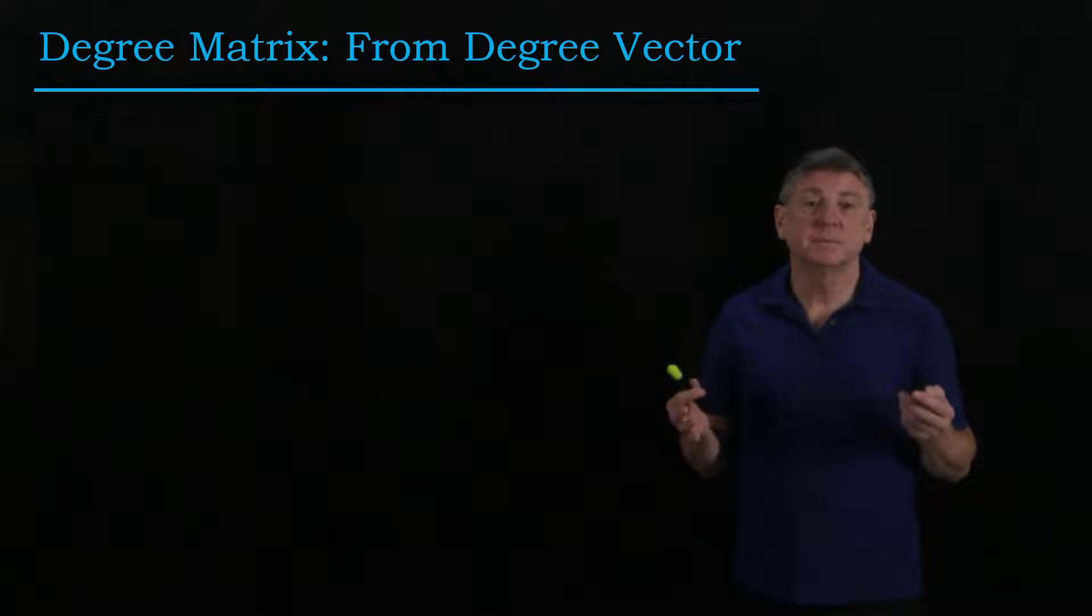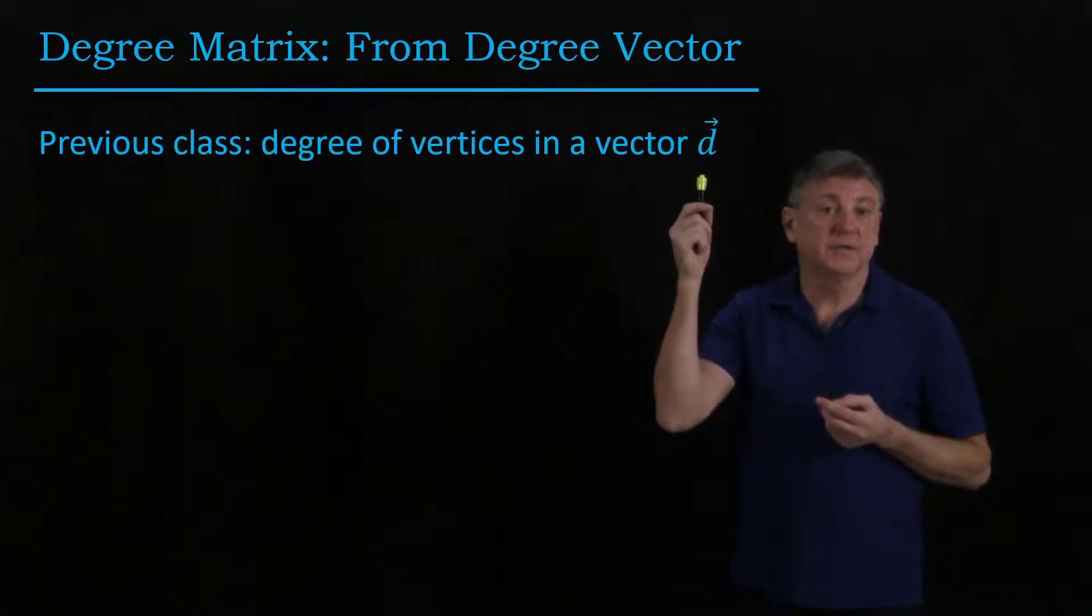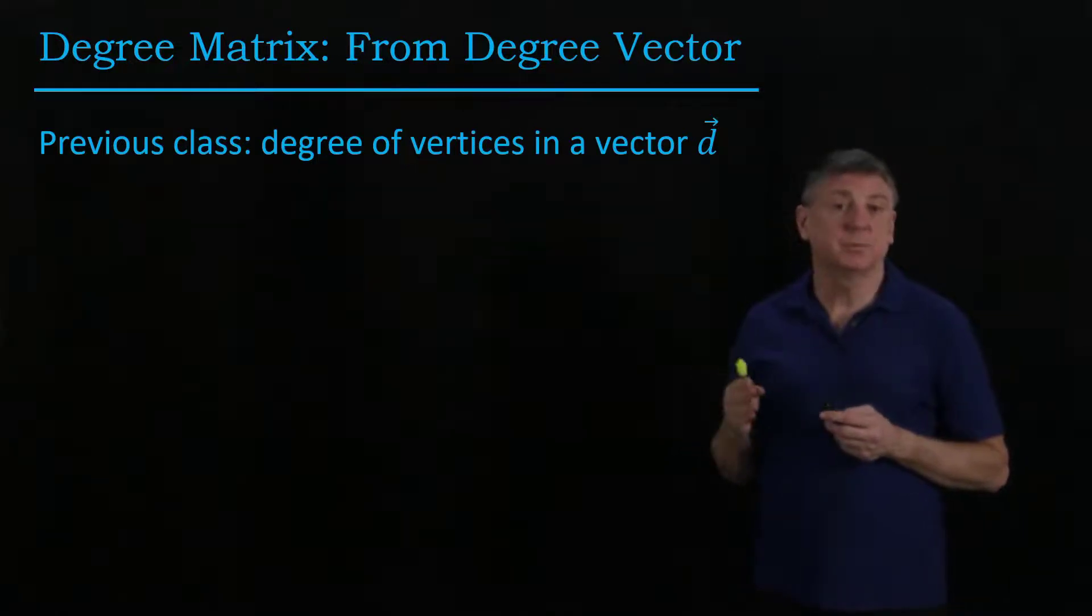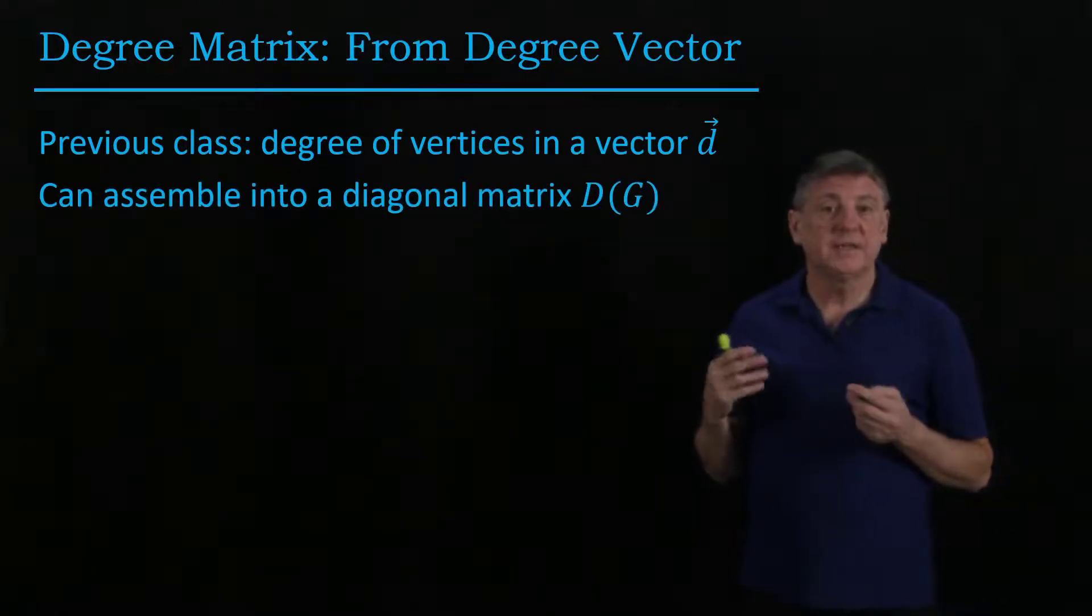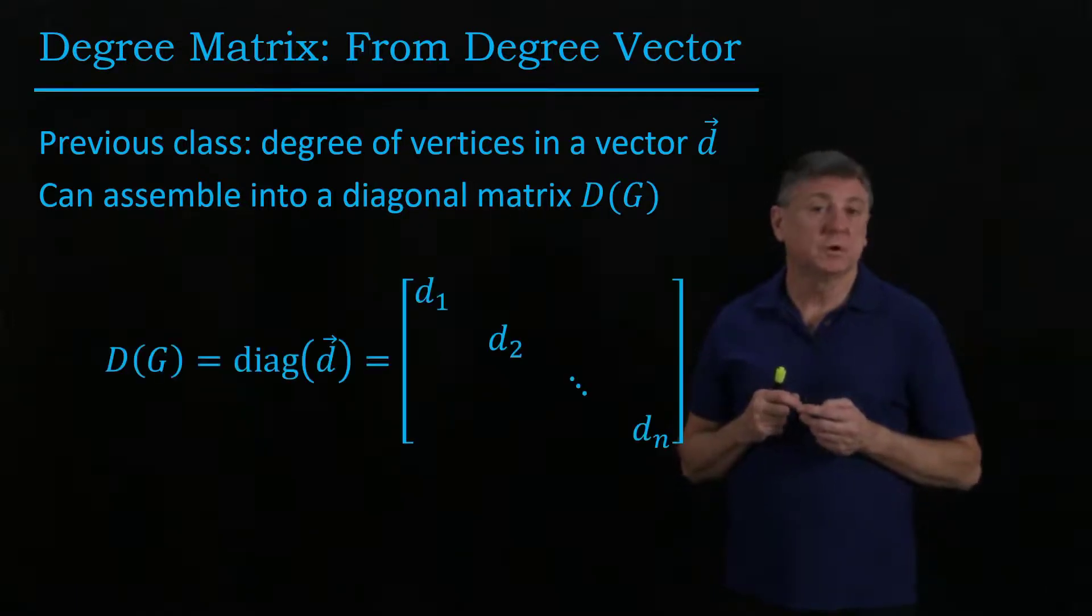The degree matrix is a simple matrix. It comes from the degree vector. This degree vector is what we found when we multiplied the adjacency matrix by the ones vector. We can take this vector and assemble it into a diagonal matrix. We'll call that capital D(G).